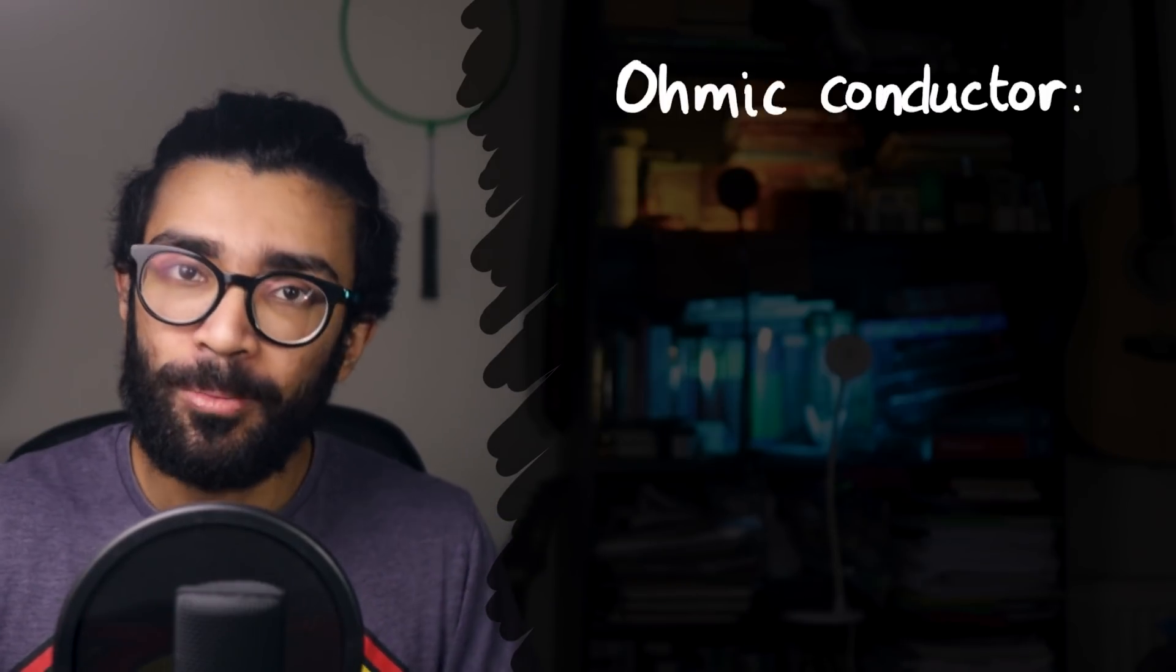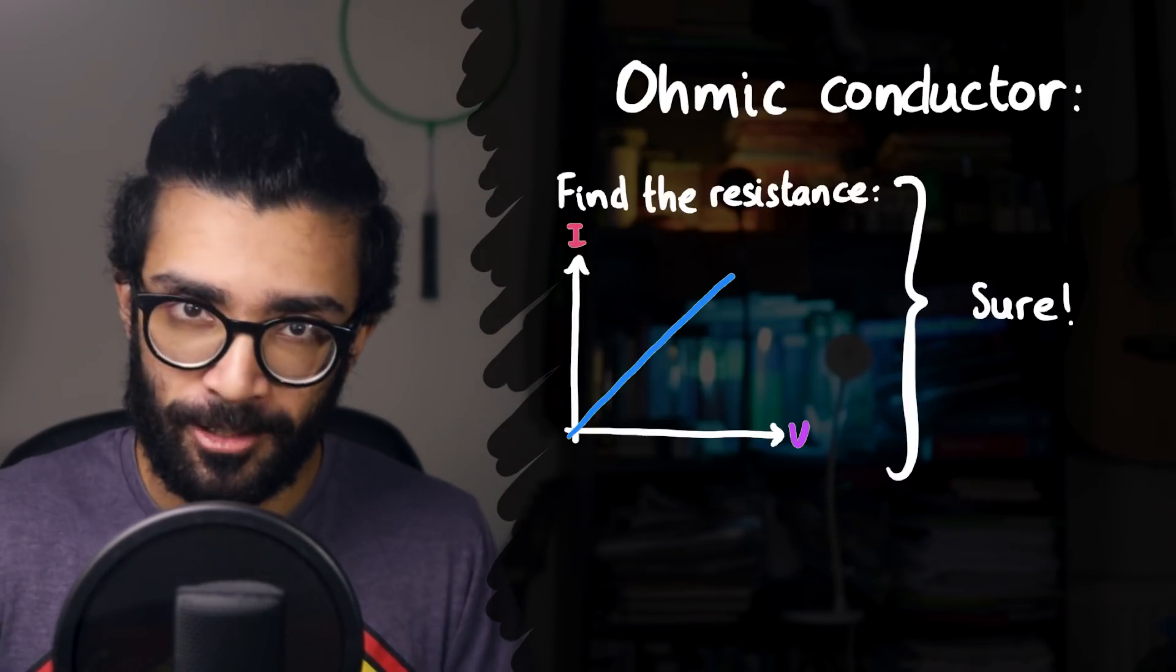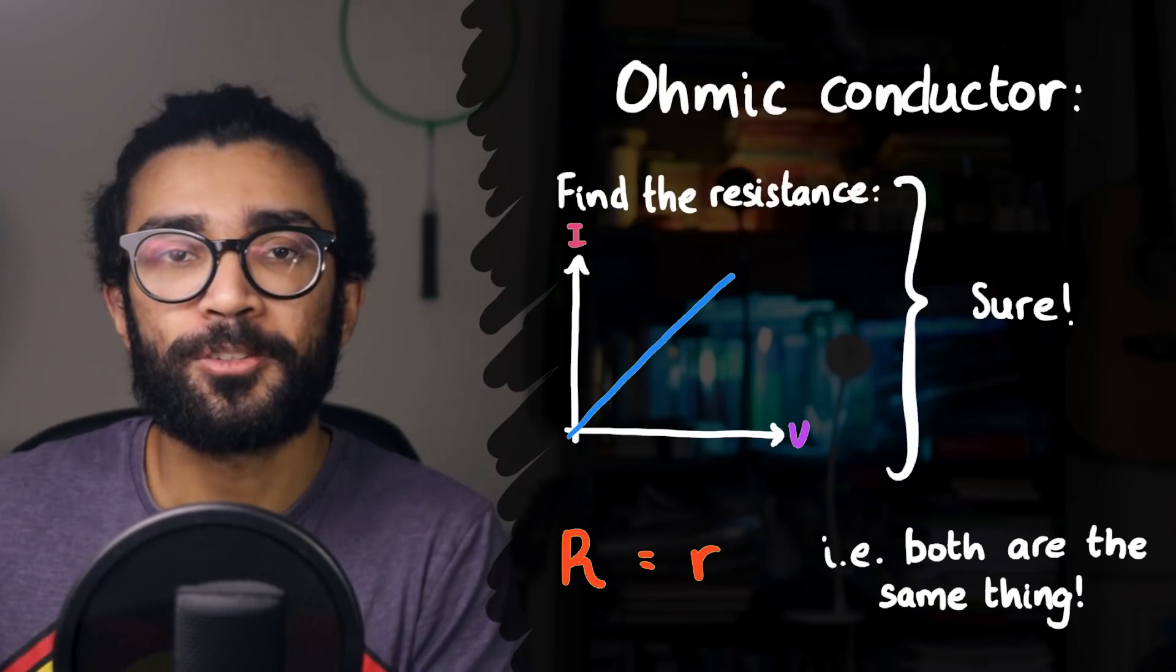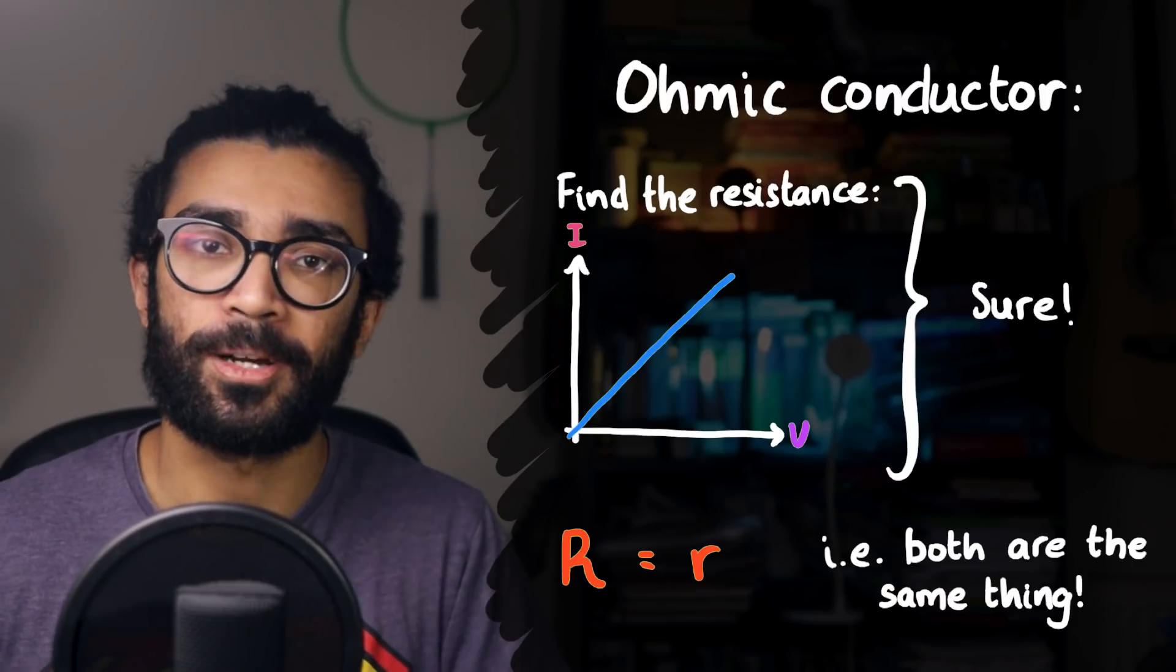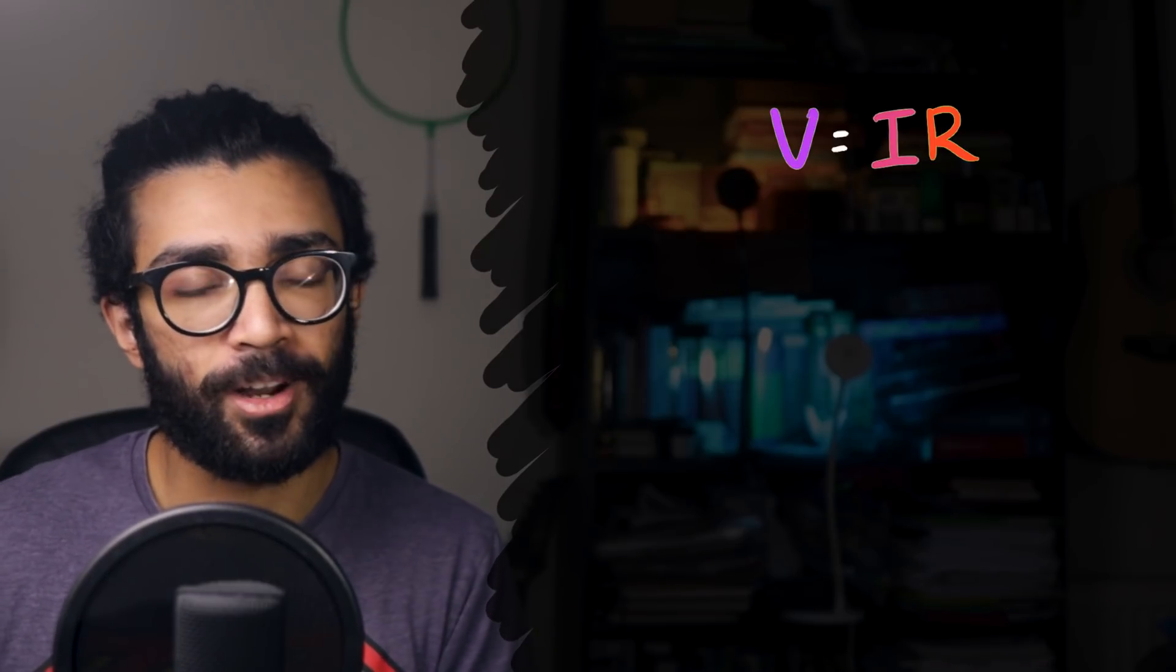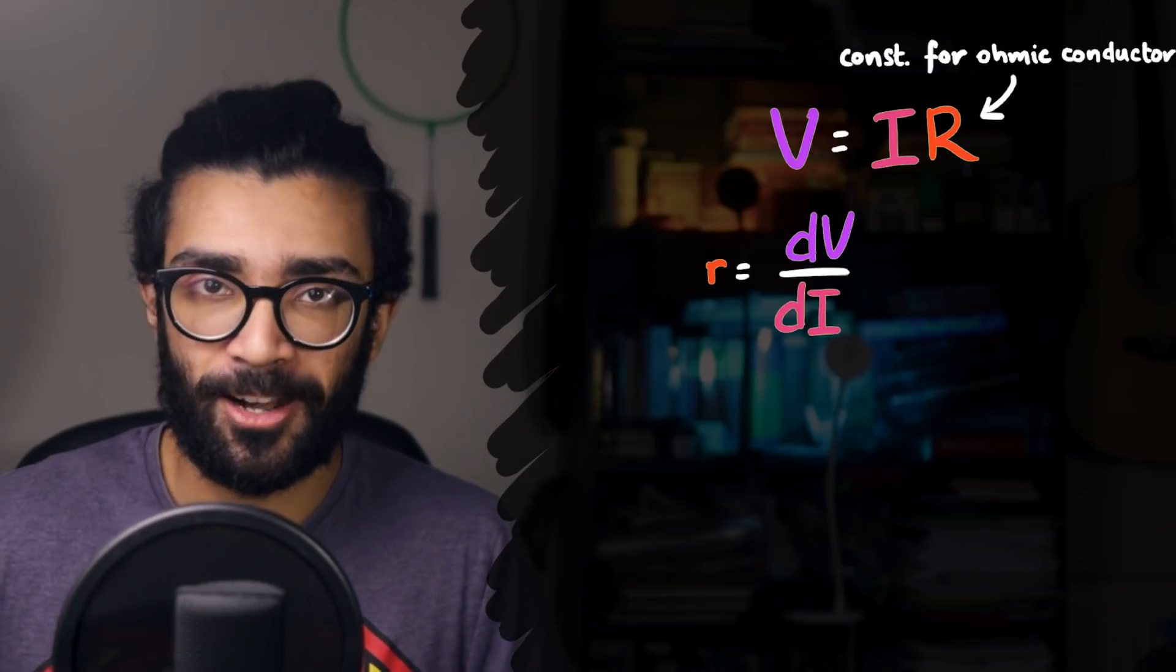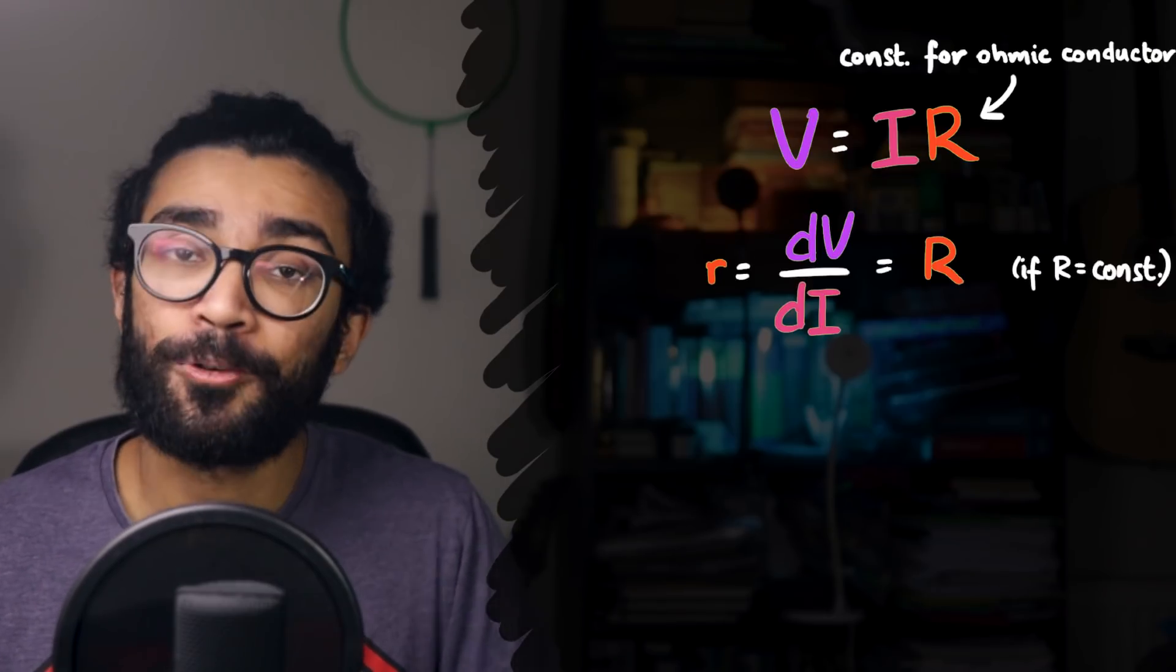Incidentally, if we now go back to an ohmic conductor, the graph looks like this now, we could choose to find the static or the differential resistance. But in this case, they just happen to be exactly the same. For those of you familiar with calculus, we can see why that's the case by starting with the equation V equals IR and trying to calculate dV/dI, taking into account that R is now a constant. When we do this, we find that dV/dI is simply equal to R.